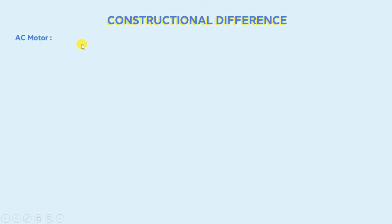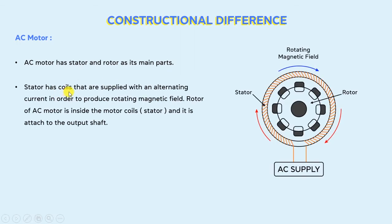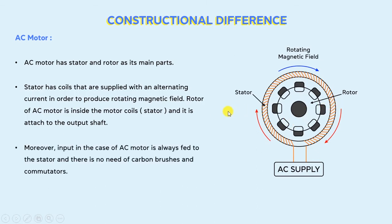Now let's come to the construction of an AC motor. An AC motor has a stator and rotor as its main parts. The stator has coils that are supplied with an alternating current in order to produce a rotating magnetic field. Here you can see in the diagram that AC supply is given to the stator in order to produce a rotating magnetic field. The rotor is present inside the stator and it is attached to the output shaft of the AC motor. Moreover, in the case of an AC motor, the input is directly supplied to the stator and there is no need for carbon brushes and commutators.